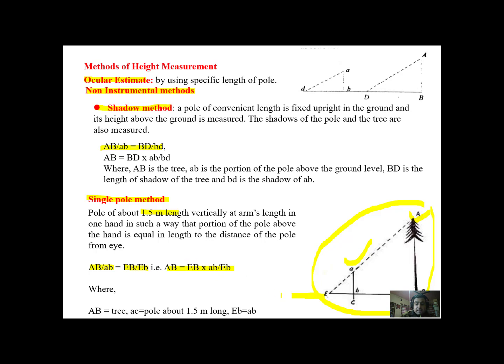But care has to be taken that we hold the pole at a distance which is equivalent to the distance that you are holding the pole from your eye. That means capital EC and ab has to be of same dimensions. This is how we can use single pole method.